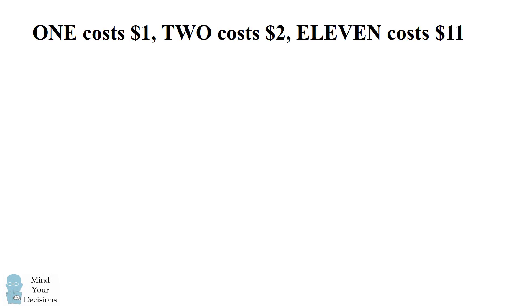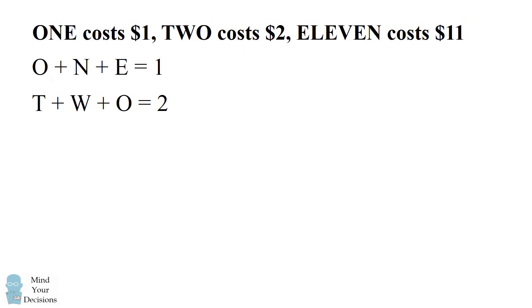We will convert this problem into algebraic equations. The letters for the word 1 — O plus N plus E — together cost $1. The same thing is true for 2: the letters T plus W plus O equal their cost of $2.